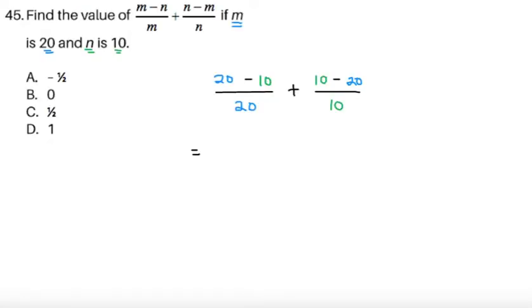To continue, item 45. Find the value of m minus n over m plus n minus m over n if m is 20 and n is 10. So this is just a substitution item. We substitute m and n directly so we'll get 20 minus 10 over 20 plus 10 minus 20 over 10.